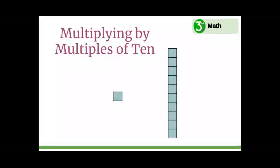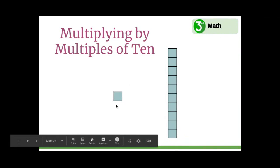Let's practice multiplying by multiples of 10. In our examples today, we will see two models. This model is one cube — it stands for one. Over here, this is ten ones stacked on top of each other. This is a ten rod.